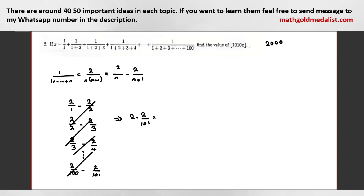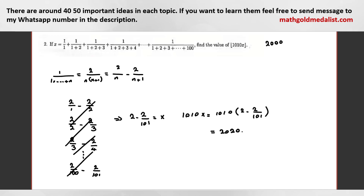Yeah. So what is it? It is x. The problem says 10x, so x is 2 minus 2/101, right? So 10x is 10 times (2 minus 2/101), which is 20 minus 20/101. They cancel, which is 2,000, right? Yes, and the floor of that is 2,000. Completely correct. Good job.